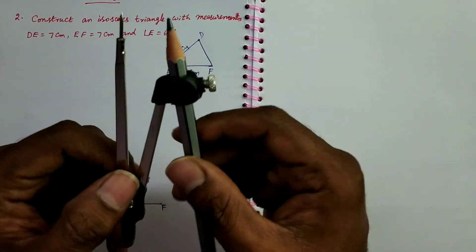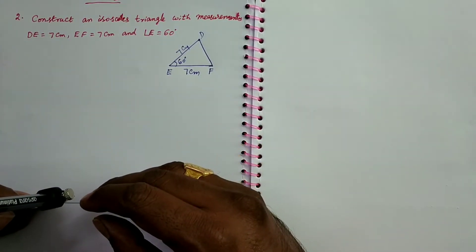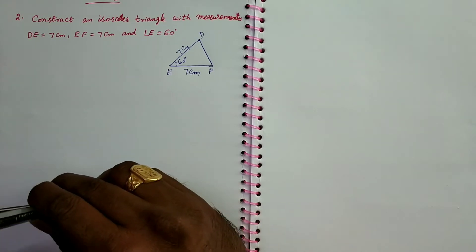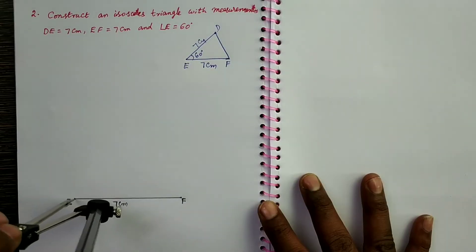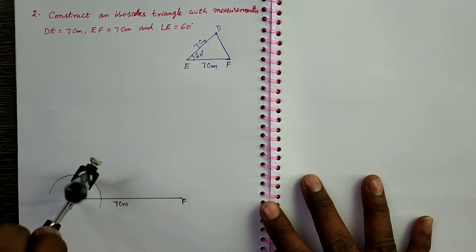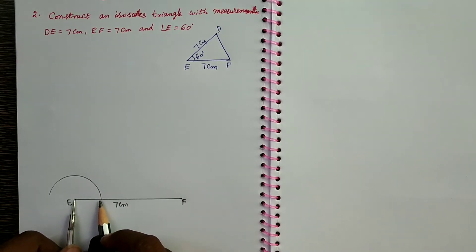No need to measure by scale. Take E as the center. That means keep compass point like this. Draw an arc with this measurement only. With this measurement only.